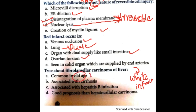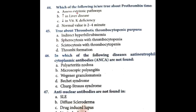Fibrolamellar carcinoma of the liver — is it common in old age? No, it is seen in young age, 20 to 40 years. Is it associated with cirrhosis? No, it is not associated with cirrhosis. Not associated with hepatitis B virus. It has good prognosis compared to hepatocellular carcinoma.